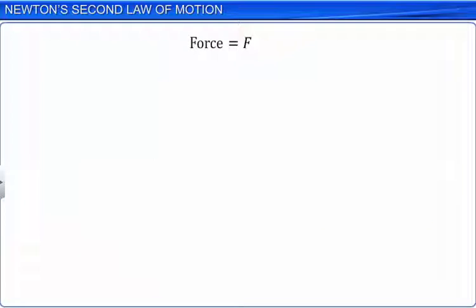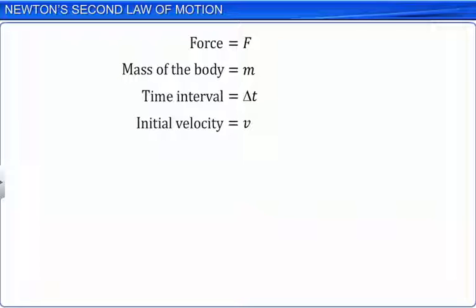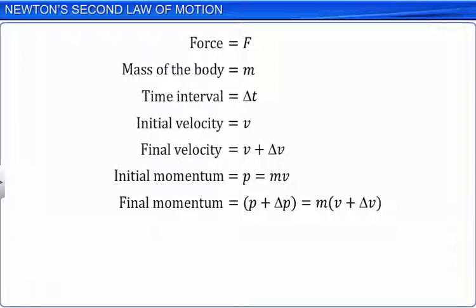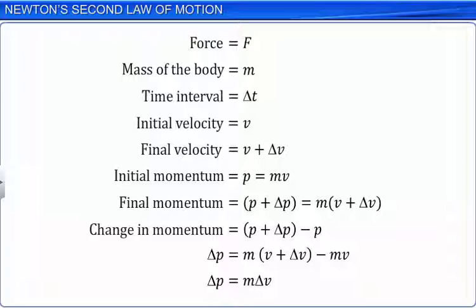Consider a force F being applied on a body of mass M for a time interval of delta T seconds. This results in change of velocity of the body from initial velocity V to final velocity V plus delta V. Here, initial momentum P is the product of mass M and initial velocity V, and final momentum P plus delta P is equal to the product of M and final velocity V plus delta V. On simplification, we get the change in momentum delta P as the product of mass M and the change in velocity delta V.